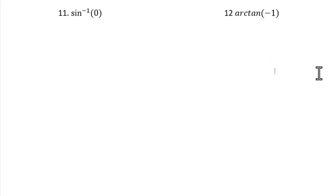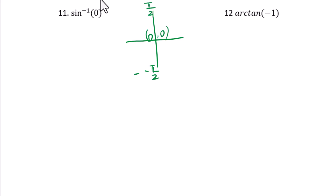Question 11: inverse sine of 0. The sine graph has values negative 1, 0, 1 at angles negative pi over 2, 0, pi over 2 respectively. Since sine of 0 equals 0, inverse sine of 0 equals 0.